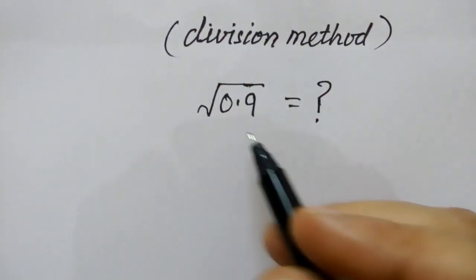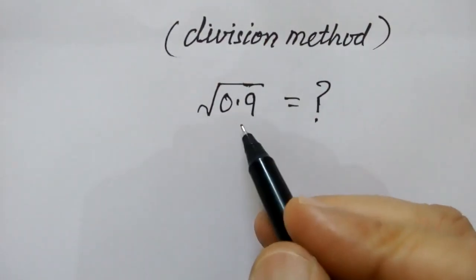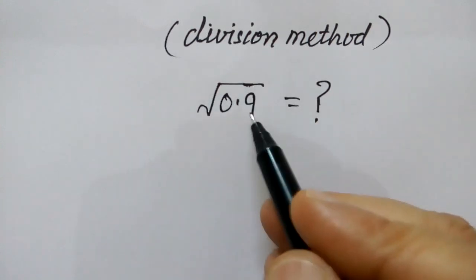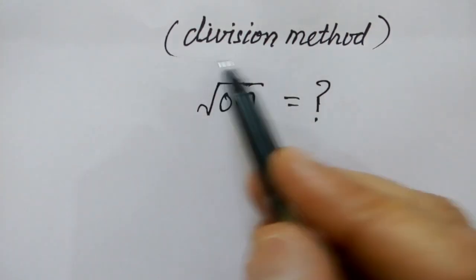Hi friends, today we have a nice problem. We have to find the value of square root of 0.9 using the division method.